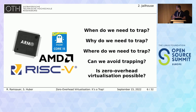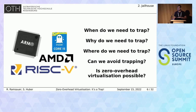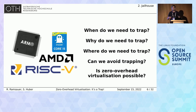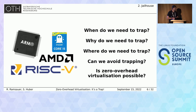We will try to answer the question of whether zero overhead virtualization is actually possible or not. When we have a virtualized system, we need to differentiate between avoidable and unavoidable overhead. Unavoidable overhead is systemic overhead. We can systematically categorize different types of overhead that appear on those systems. Stefan is now going to explain this.